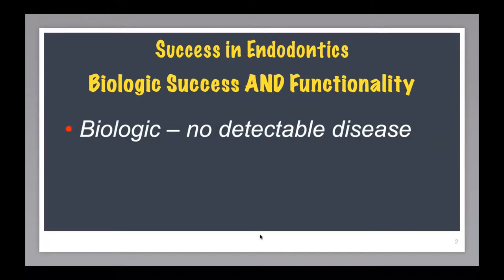So, if we define success in endodontics today, we look at two aspects. The first is biologic success, which is what we have done traditionally from the beginning of the specialty — that is, no detectable disease. That would classically be a patient with no symptoms, and we would look at the radiograph and not want to see any sign of periradicular inflammation, lucencies, primarily at the apex or around accessory canals.